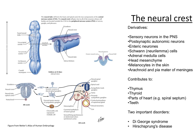For example, these cells form all of the sensory neurons in the peripheral nervous system. They form the post-synaptic autonomic neurons. They form the enteric nervous system, as well as forming cells involved in myelination and also the endocrine system.